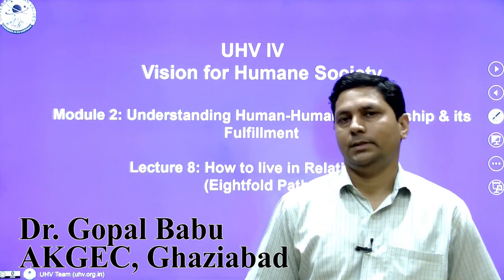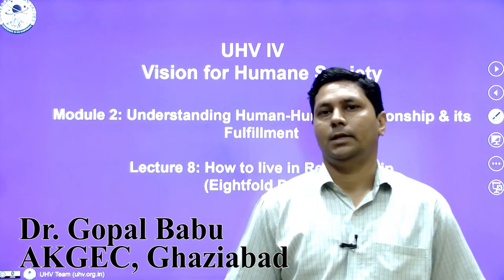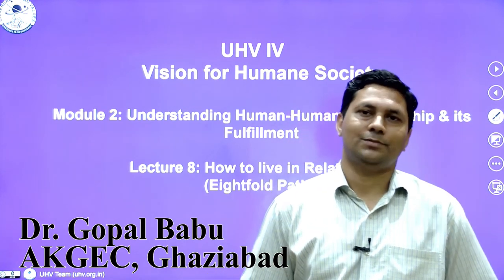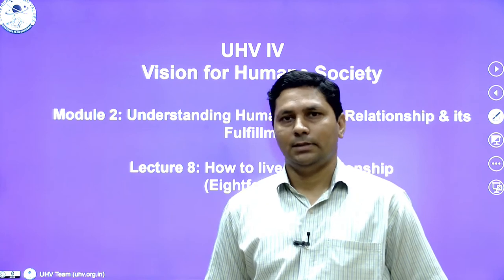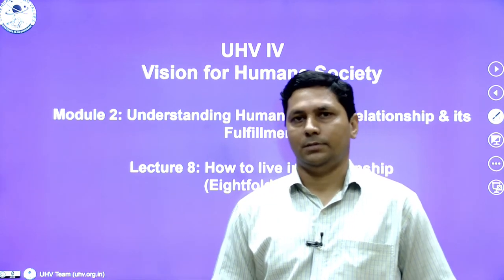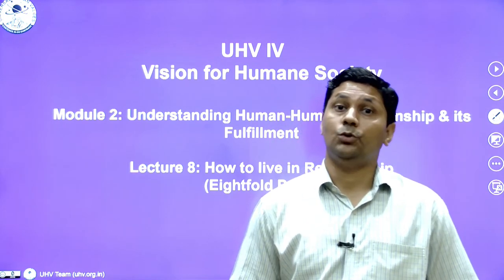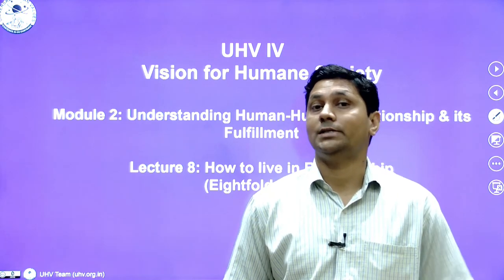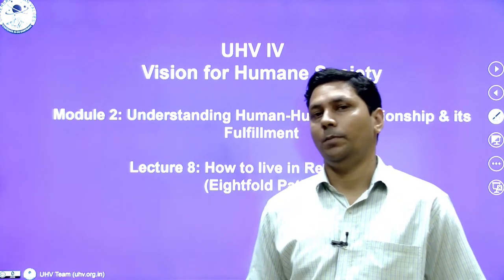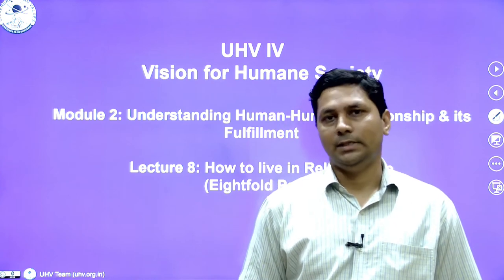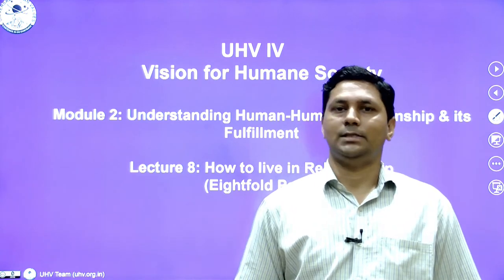In previous lectures we talked about established values, expressed values, then we saw relationship types with view 1 and view 2. In this lecture onwards, we are going to talk about various ways to ensure continuity of happiness and harmonious relationships. One of those formulations given in traditions is the 8-fold path.